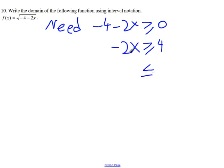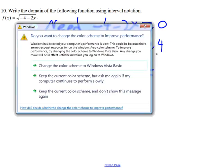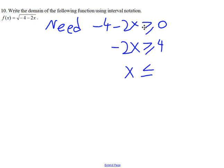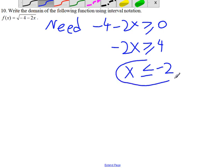So, negative 2x divided by negative 2 is x, 4 divided by negative 2 is negative 2. So that's the solution set for the inequality, and that is the domain of this function.